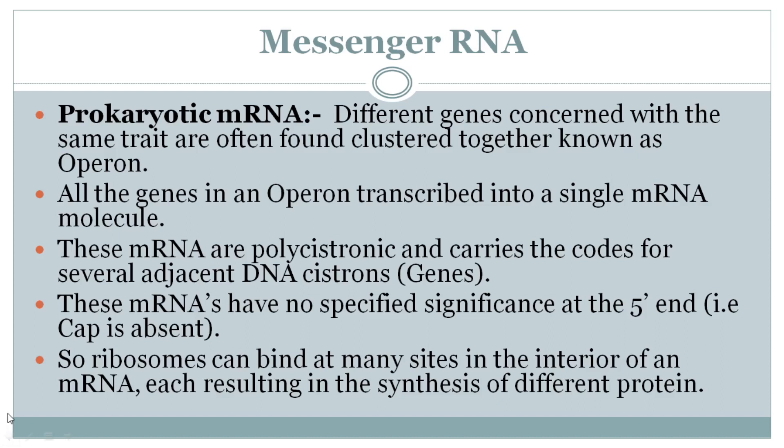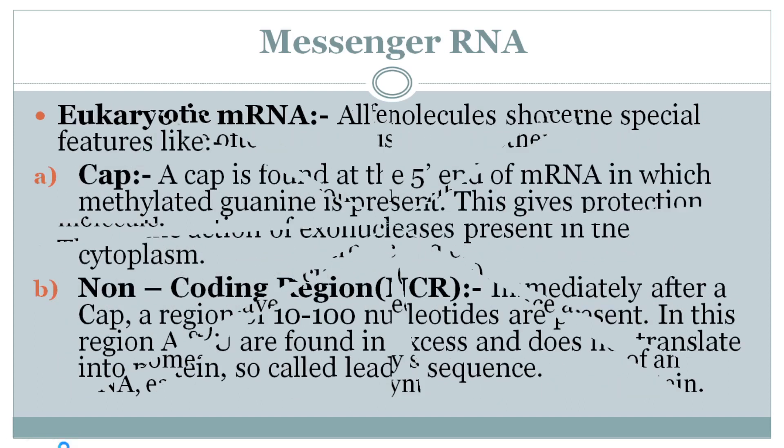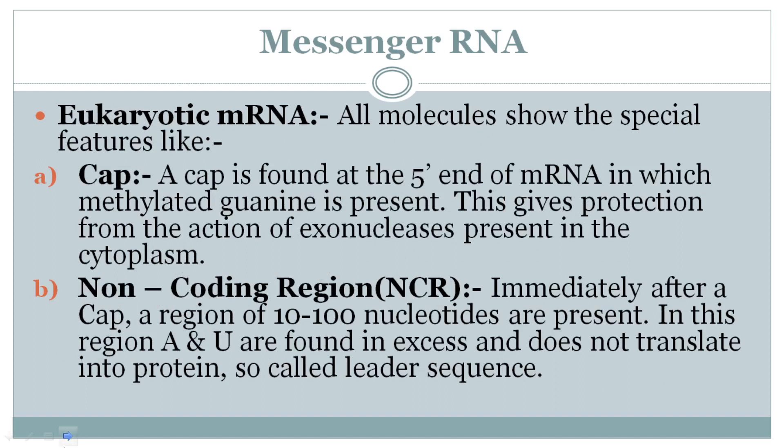Prokaryotic mRNAs have no specified modification at the 5' end. Ribosomes can bind at many sites in the interior of the mRNA, resulting in the synthesis of different proteins. In eukaryotic mRNA, there is a 5' cap as already described. The non-coding region contains 10 to 100 nucleotides, where A and U are found in excess, and it does not translate into protein.